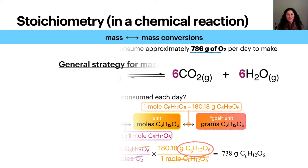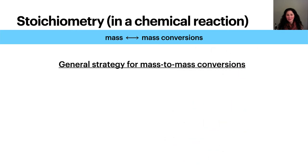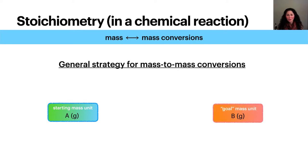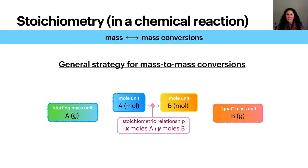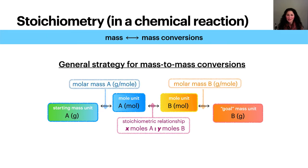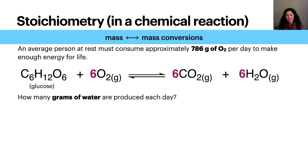The strategy we just used can be generalized for getting from the mass unit of one chemical species to the mass unit of another. For any reaction where A is one species and B is another, we convert from the mass of A to the mass of B by going through the mole unit. The conversion from grams to moles uses the molar mass, and the conversion from moles of A to moles of B uses their stoichiometric relationship. Now it's your turn: how many grams of water are produced each day, assuming the person is consuming 786 grams of oxygen per day? Please press the pause button and write out your answer using dimensional analysis.